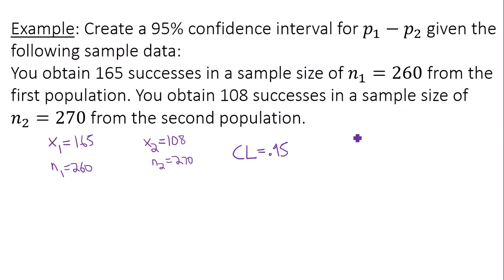So our confidence interval for the difference of the two proportions is going to be between 0.15 and 0.32. This is the confidence interval we are trying to build.